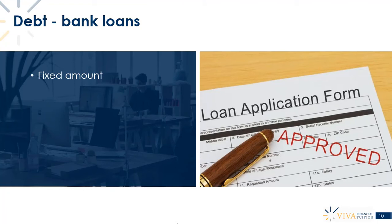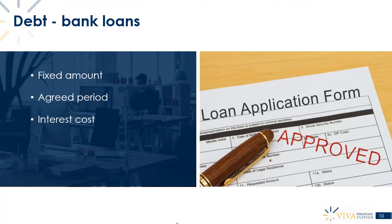A bank loan is for a fixed amount — you agree to receive some cash from a bank. It is for an agreed period, probably a number of years since we're dealing with long-term finance. There will be a cost associated with the bank loan — it's not free. There's going to be interest that you have to pay, either at the end or throughout the period. There will also be repayment terms, telling you over how many years you'll pay and whether payments are monthly, quarterly, weekly, or annually.